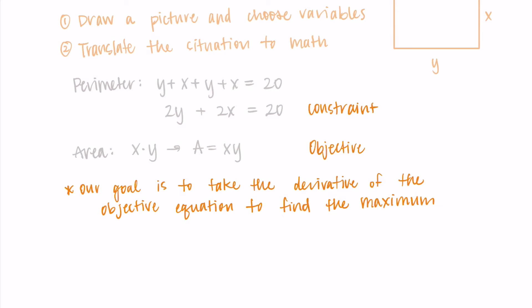Since we are trying to find the maximum of the area, our goal is to take the derivative of that objective equation, the area equation, in order to find the maximum. We want to apply the first derivative test to it to figure out where the maximum value is. But currently it has two variables in it. We could maybe take this derivative using implicit differentiation, but we have this other equation we haven't used yet.